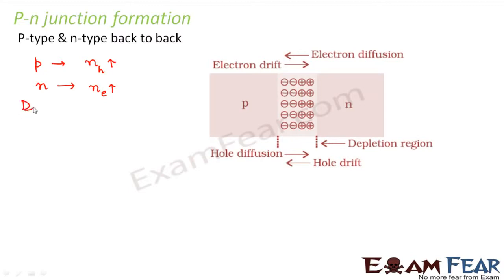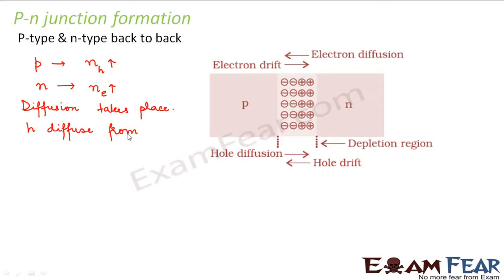Due to the difference in concentration in the p region and n region, diffusion takes place. Diffusion means movement of particles from a region of higher concentration towards a region of lower concentration. The p region has high concentration of holes and the n region has low concentration of holes, so holes diffuse from p to n. Similarly, electrons diffuse from the region of higher electron concentration, that is from n to p. So electron diffusion and hole diffusion both start taking place.